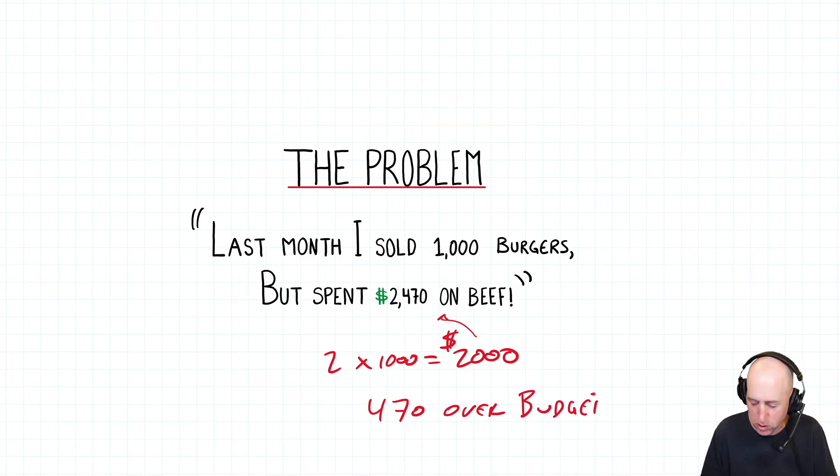And we look back and of course it should be two bucks a burger. And so if it was two bucks a burger and you sold a thousand burgers, you should have spent two thousand bucks. You spent twenty four seventy. You blew the budget by four seventy over budget. Like bad news, Bill. And if I wasn't breaking the news to him, he knew he was like, yeah, that's why I'm talking to you. Like, is there any way you can provide some insight as to what's going on here? And that's what variance analysis is all about. And that's a key topic of the chapter.